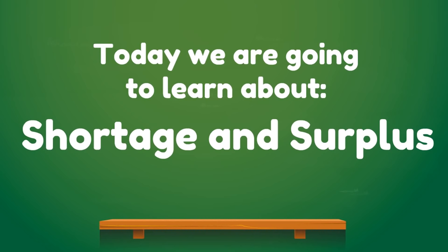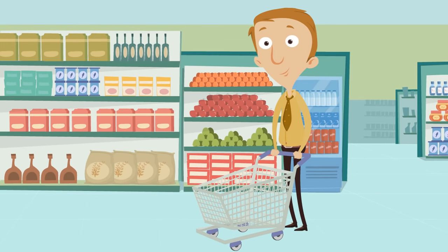Today we're going to learn about shortage and surplus, what those are, and how to tell the difference. It's a cool thing to learn, and we're going to start out by talking about shopping. Sometimes you can have a cart, you put items in the cart that you're interested in purchasing, all the items have a price. At the end, you get to add them all up and buy them.